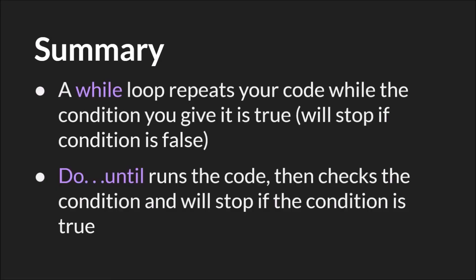So in summary, a while loop repeats your code while the condition you give it is true, and it will stop repeating once that condition is false. And a do until loop runs the code, then checks the condition and will stop if the condition is true instead of if the condition is false. It's possible to create endless loops with both while and do until, so you want to be careful and you always want to make sure that you have set up your condition correctly. If you ever get a blank screen or the program seems to just stop responding without giving you an error message, you've probably created an infinite loop and you should stop the build. Or if you're running the debugger, you can pause it and probably see where that endless loop has been created.